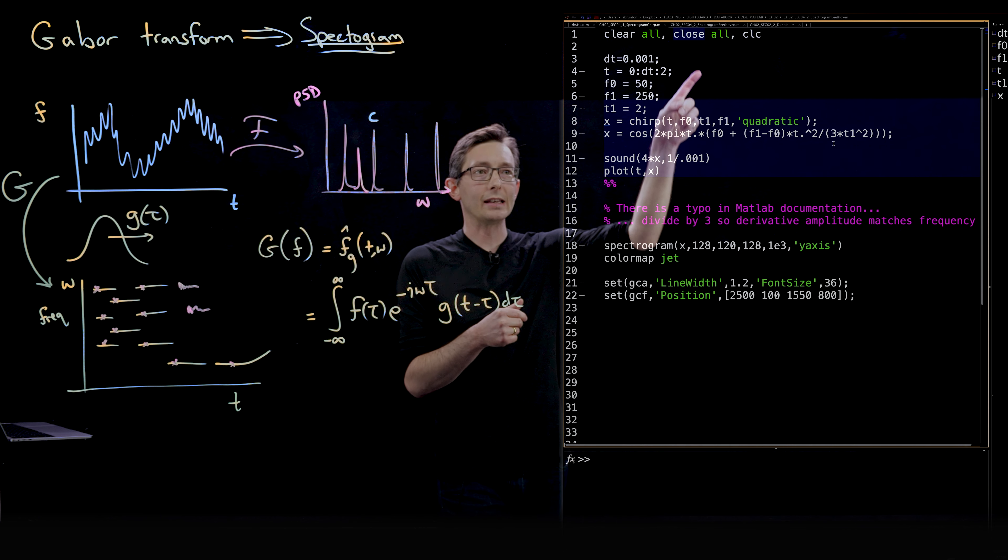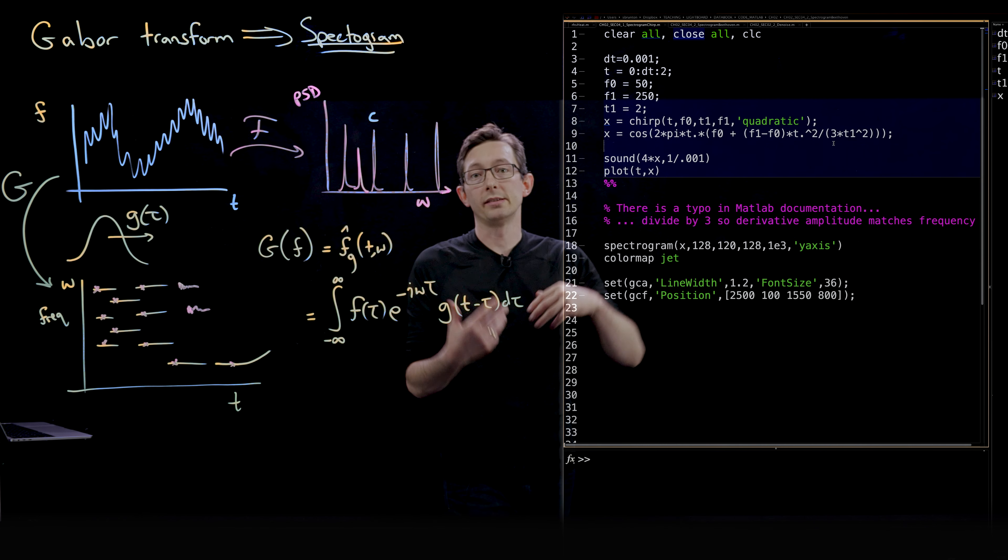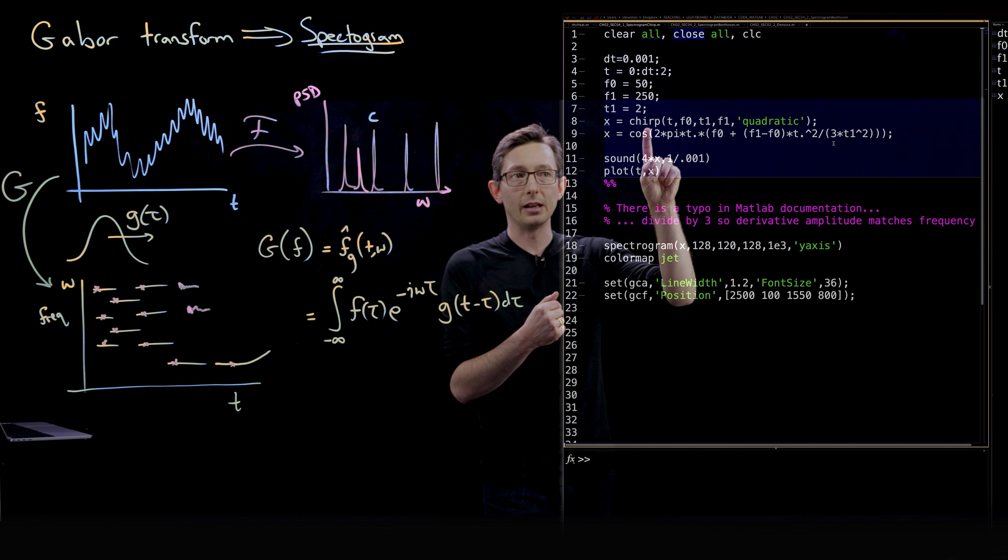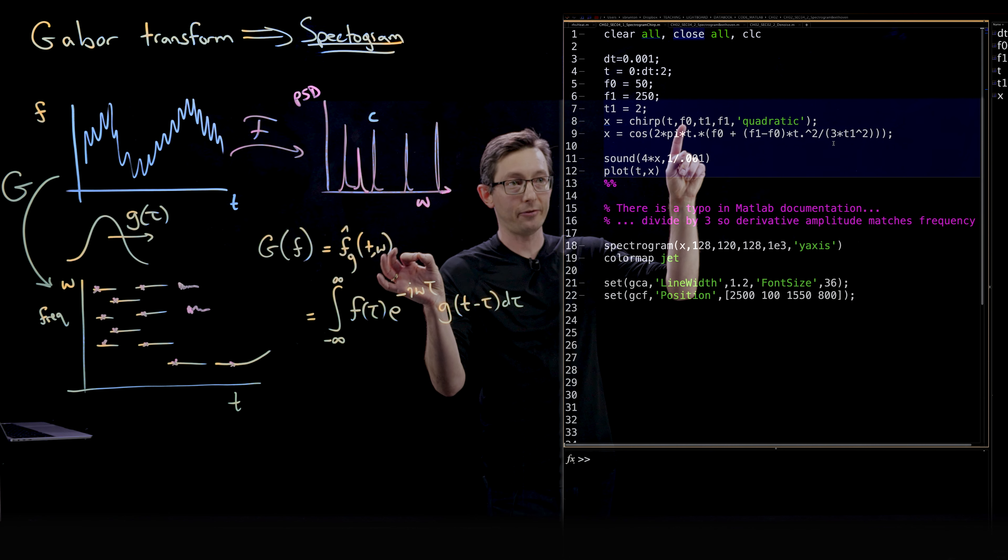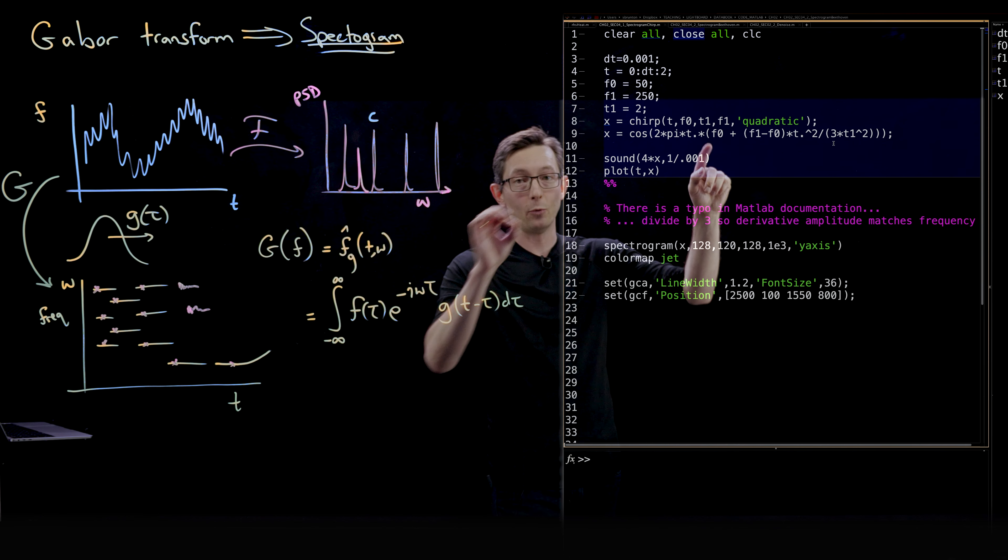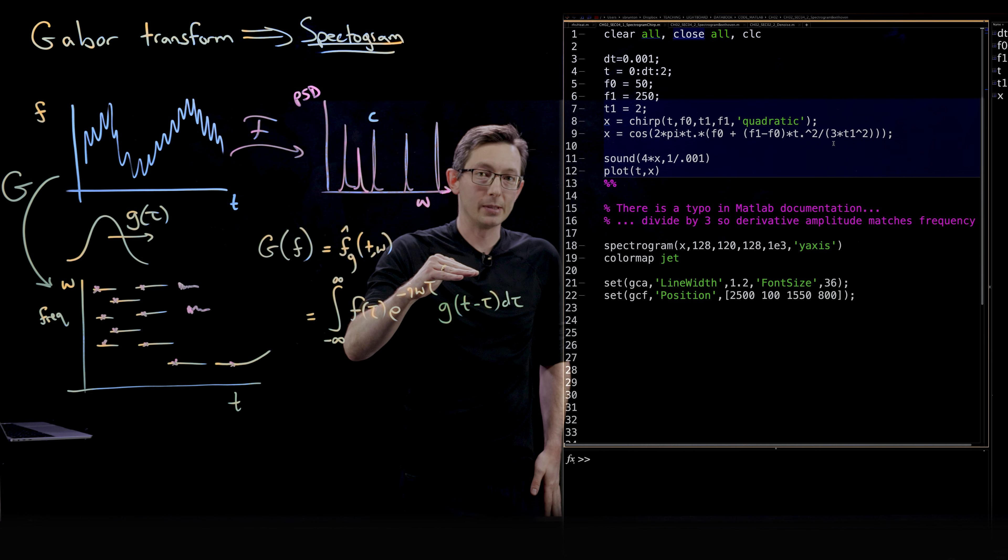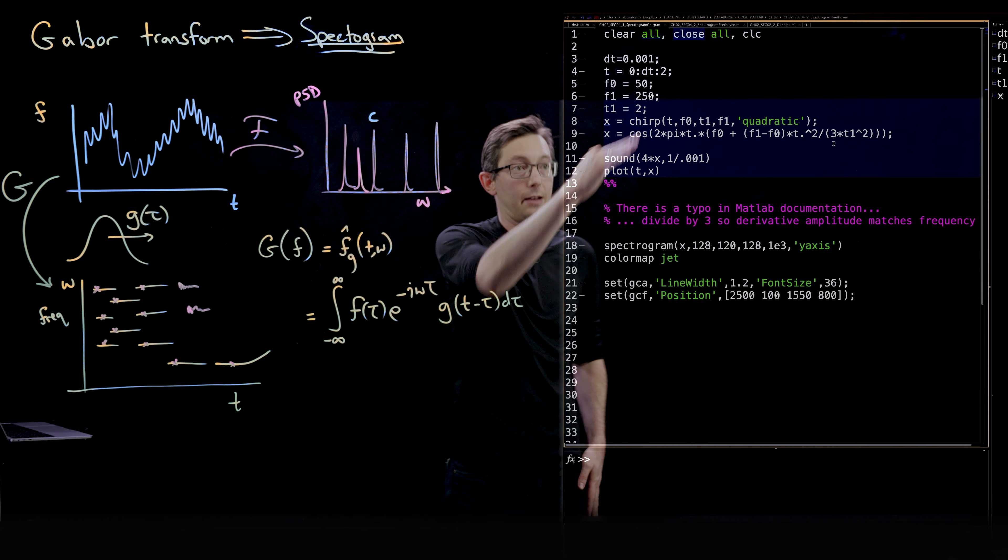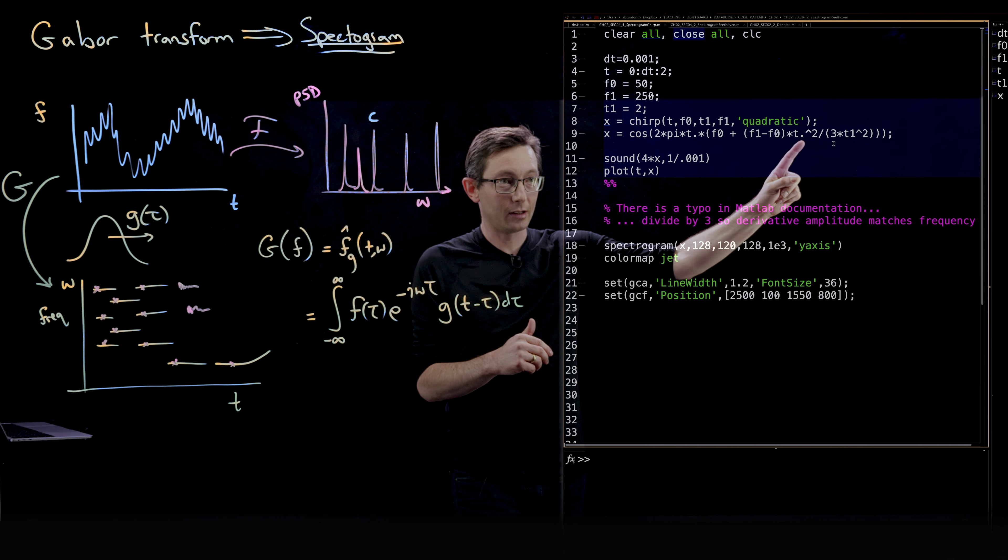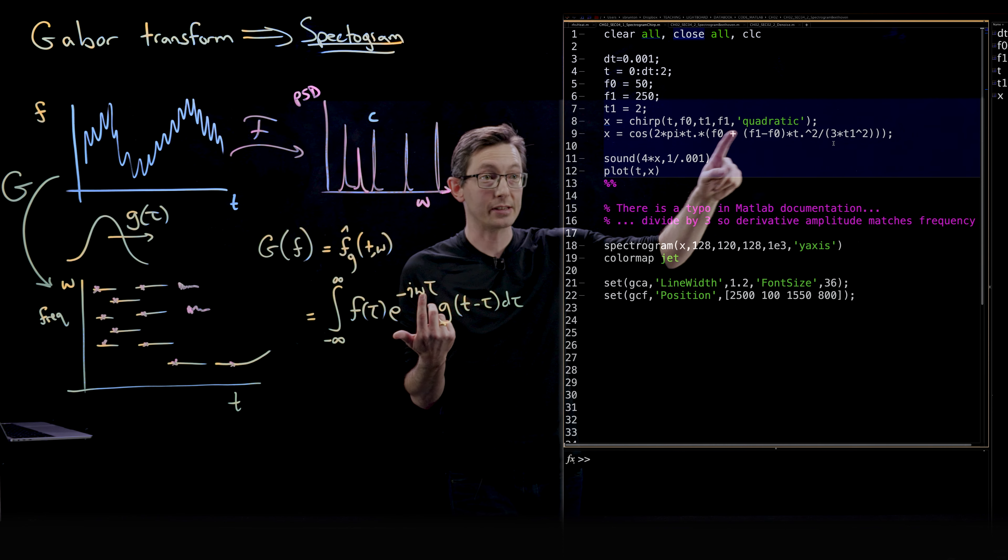Here I'm creating a simple two second audio clip with a delta T of 0.001, so one kilohertz sampling. In MATLAB there's this built-in chirp command. In this chirp command I'm going to go from frequency F0 at time zero to F1, a new frequency at time one, from low frequency to high frequency using a quadratic path. I've actually created my own version just to show you that you can build it yourself.